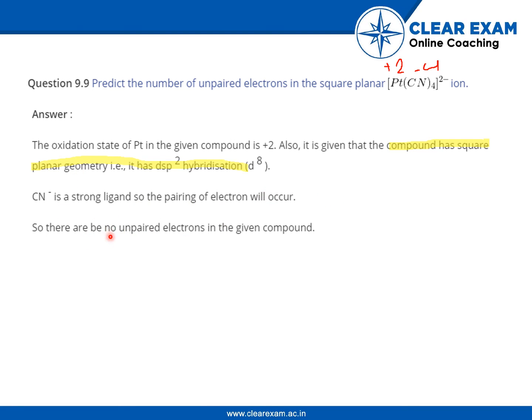So there have to be no unpaired electrons in the given compound. Obviously, because if there is a strong field ligand, the pairing will take place, so therefore no unpaired electrons will be left.